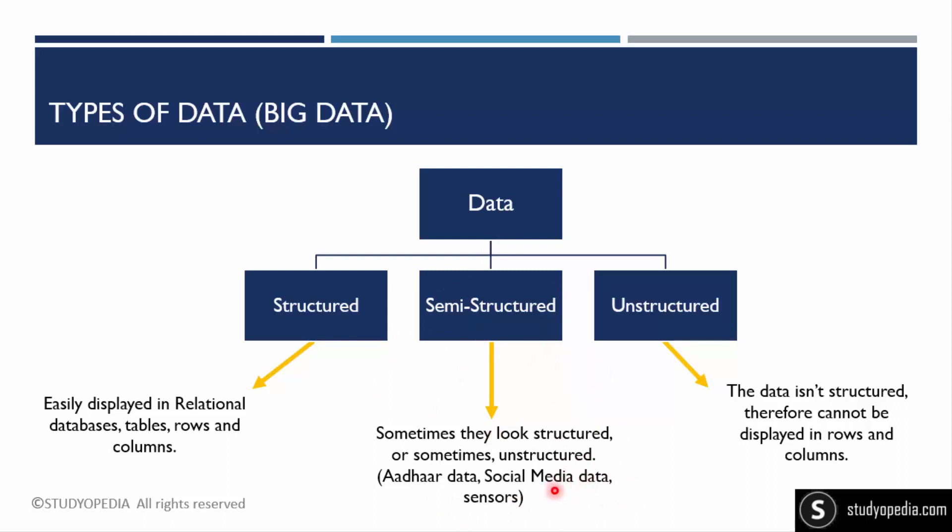Social media data is also semi-structured. How? Your tweets—let's say 10 people liked your tweet, 20 people liked your post on Facebook, three of them shared your post—these are numbers that can be easily saved in rows and columns. But the images you post on Facebook or Twitter, the videos you post on Instagram, are managed using unstructured form. The same goes for sensors.